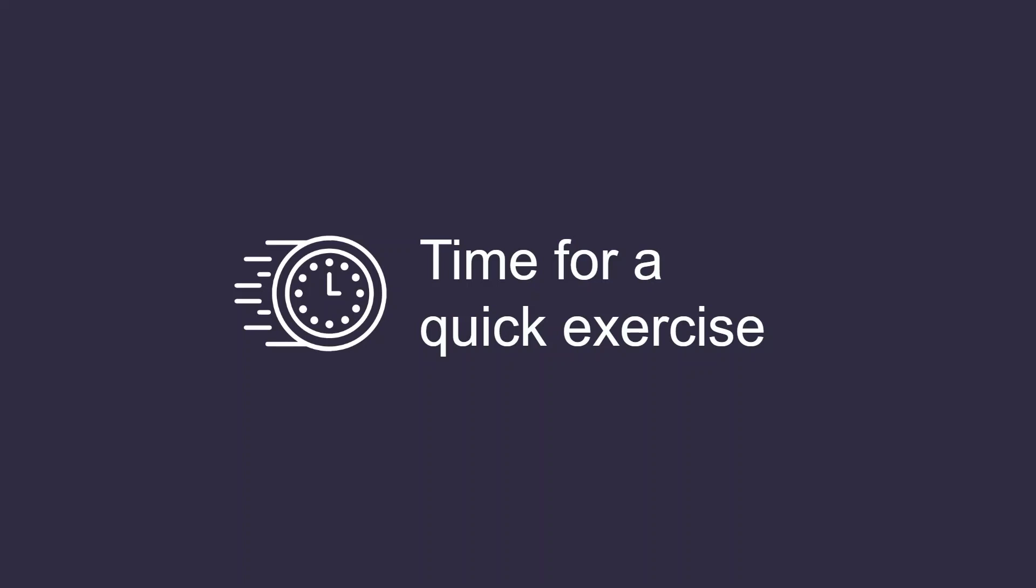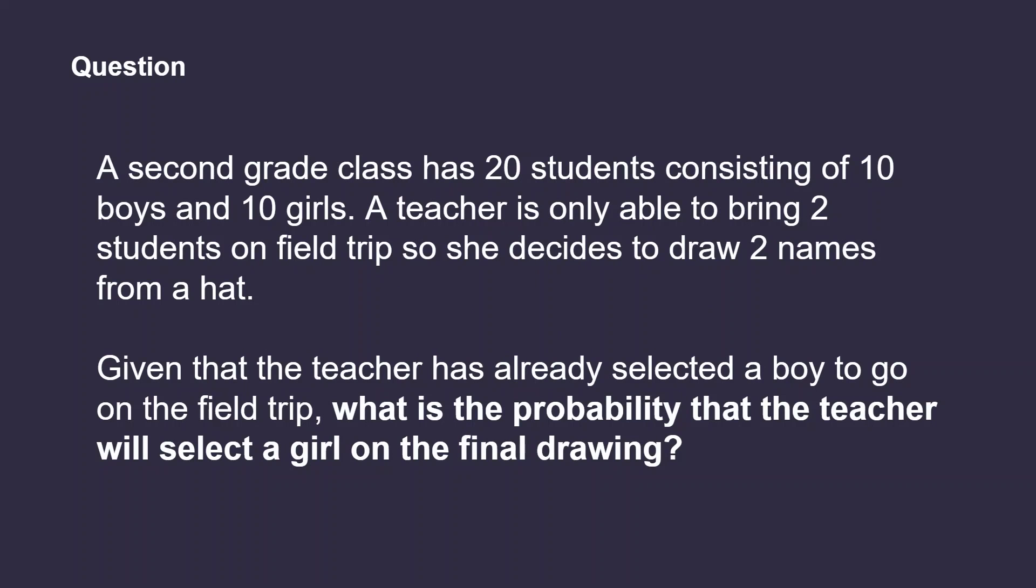Let's see what we learned about probability today with a quick exercise. A second grade class has 20 students consisting of 10 boys and 10 girls. A teacher is only able to bring two students on the field trip, so she decides to draw two names from a hat. Given that the teacher has already selected a boy to go on the field trip, what is the probability that the teacher will select a girl on the final drawing?